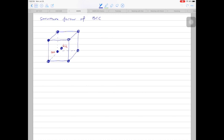Let's write down the structure factor equation again. So f is equal to sigma i fi e 2 pi i h xi plus kyi plus lzi.